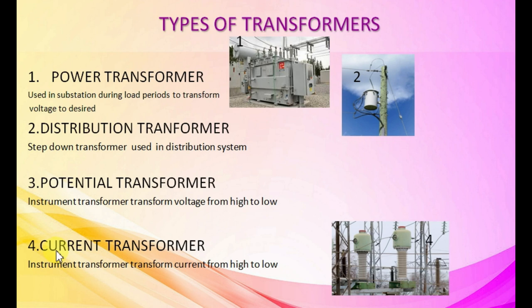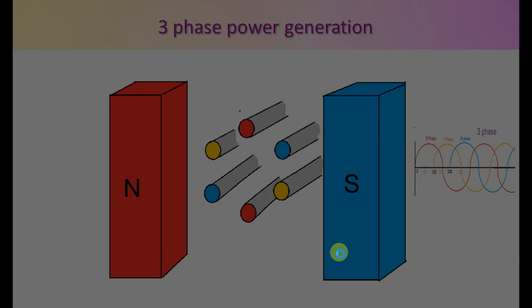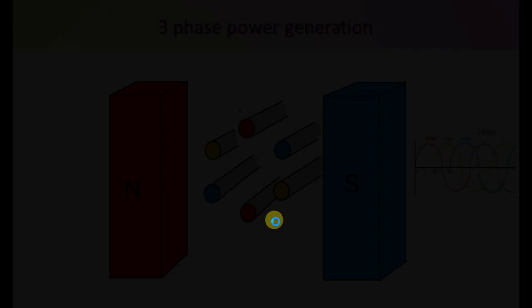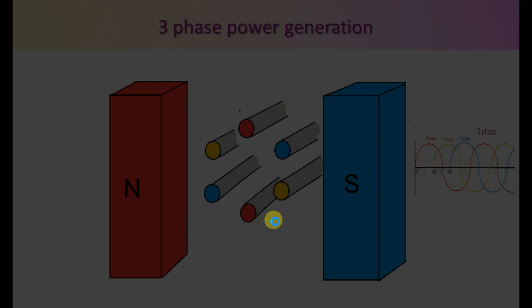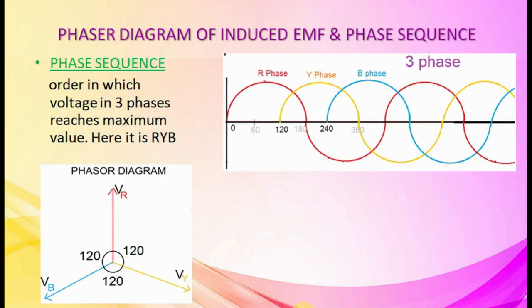Three-phase circuits. Single-phase power refers to a 2-wire AC power circuit with 1 power wire and 1 neutral wire. Three-phase power is a 3-wire AC power circuit, which may include 1 neutral with 3 power wires. The conductors are out of phase and spaced 120 degrees apart. In 3-phase generation, each turn has 2 conductors; when conductors rotate inside a magnetic field, they cut magnetic flux and EMF is induced. Phase sequence is the order in which voltage in 3 phases reaches maximum value — here it is R, Y, B.